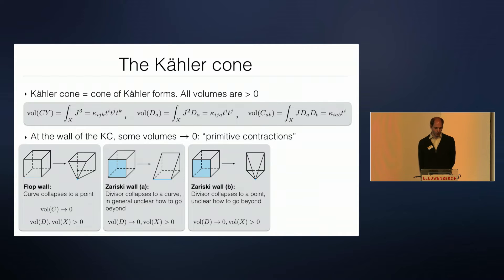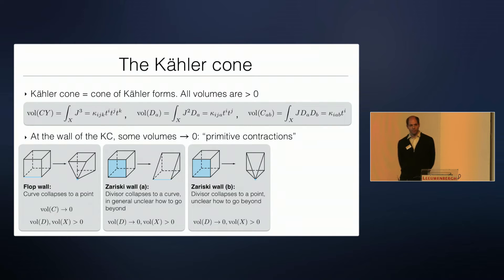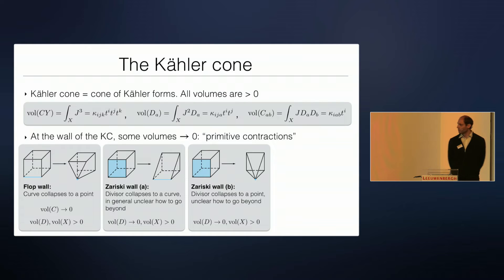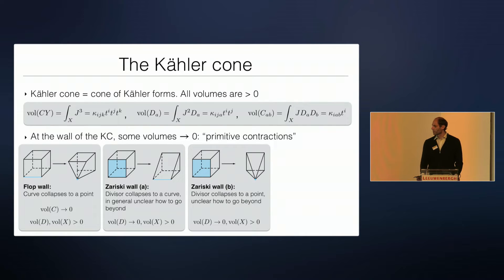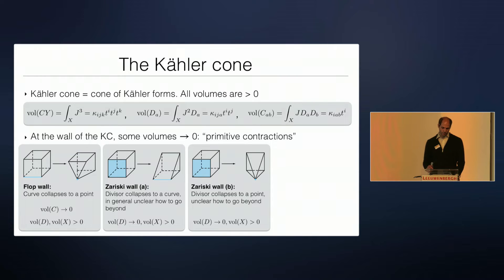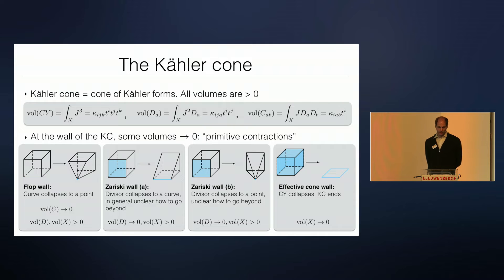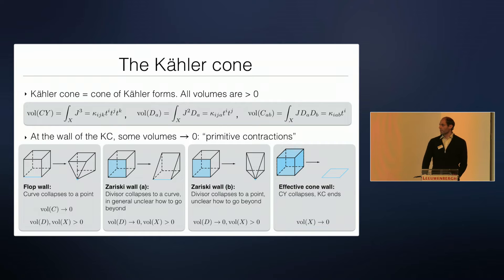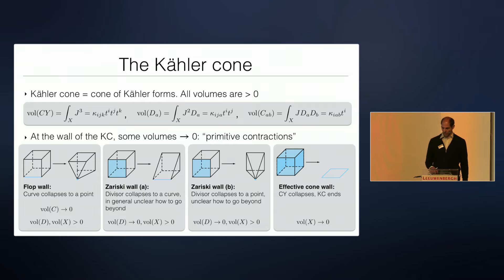Then you could have a divisor collapse — the divisor could collapse either to a curve or to a point. We call this a Zariski wall, which is a misnomer I have to admit. Perhaps we should have used the nomenclature set out for primitive contractions, but we call it a Zariski wall because in the case of surfaces, these types of walls correspond to a Zariski decomposition. Finally, you could have the entire Calabi-Yau collapse to a divisor. In the case of flops, you can glue a second Kähler cone to it and get what's called the extended Kähler cone — the cone of effective divisors.